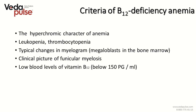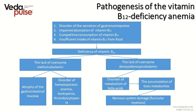The mechanism of pathogenesis of vitamin B12 deficiency anemia is quite simple. As a result of disruption of creation, absorption or intake of vitamin B12, a deficiency develops, which in turn may lead to atrophy of the gastrointestinal mucosa, disorder of hematopoiesis, anemia, glucopenia, thrombocytopenia, disorder of metabolism of fatty acids, accumulation of toxic metabolites, and nervous system damage such as funicular myelosis — which you can observe in chronic alcoholics who even when sober have a peculiar swaying gait.